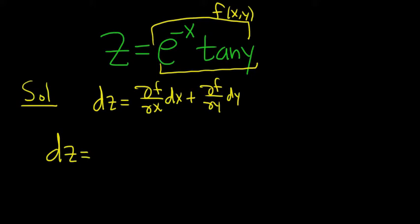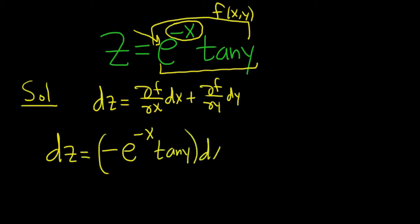So all we're doing is taking the derivative of e to the negative x. The derivative of e^(-x) is e^(-x), and then you multiply by the derivative of the inside, which is negative 1. So it's going to be negative e^(-x) tan(y) dx. That's because the derivative of this with respect to x is e^(-x) times negative 1 — that's the chain rule — and the tan(y) hangs out because we're taking the partial with respect to x, so all the y's are constants.